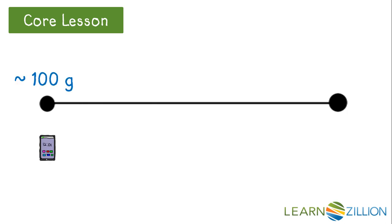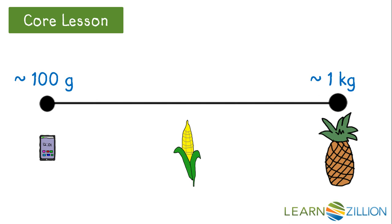A smartphone has a mass of about 100 grams, and a pineapple has a mass of 1,000 grams or 1 kilogram. Using that, what do you think is the mass of this corn? It's about 500 grams.